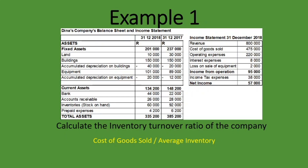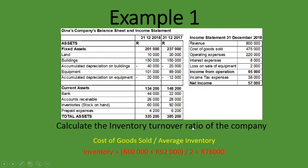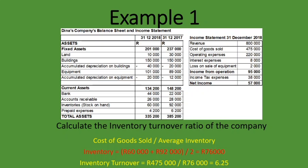Suppose we are at the end of 2018 and calculating the inventory turnover ratio. Looking under current assets: inventory at the end of 2017 is 92,000 rand, and at the end of 2018 is 60,000 rand. We add those two together and divide by two: (60,000 + 92,000) / 2 = 76,000 rand — that is the average inventory. Now we take cost of goods sold of 475,000 rand divided by average inventory of 76,000 rand.